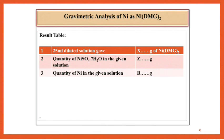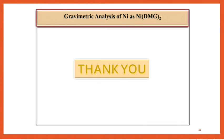Result table: 25 ml diluted solution gave x gram of nickel DMG. Quantity of nickel sulfate in the given solution z gram. Quantity of nickel in the given solution b gram. So thank you students. Thank you for watching this video. Please subscribe, like and share the video to get the notification of next video.